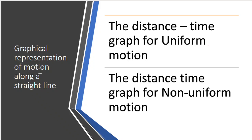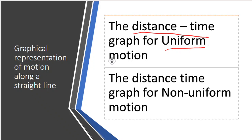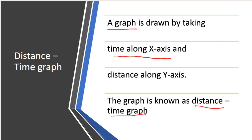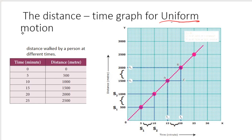Let us discuss about graphical representation of motion along a straight line. There are two different graphs discussed here: the distance-time graph for uniform motion and for non-uniform motion. From part 1, we defined uniform motion as equal distance covered in equal time. Non-uniform motion is the reverse. We draw the graph by taking time along the x-axis and distance along the y-axis.